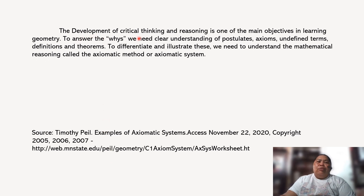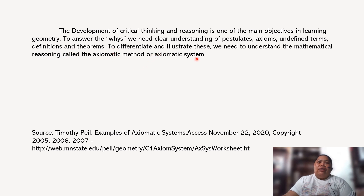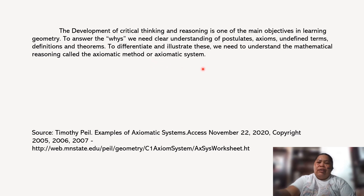The development of critical thinking and reasoning is one of the main objectives in learning geometry. To answer the whys, we need a clear understanding of postulates, axioms, defined terms, definitions, and theorems. To differentiate and illustrate these, we need to understand the mathematical reasoning called the axiomatic method, or axiomatic system.